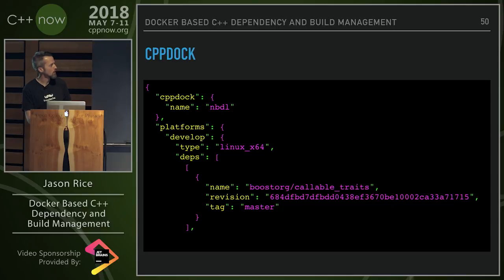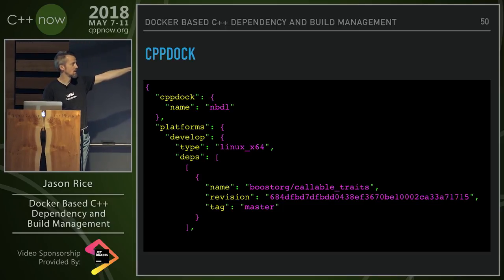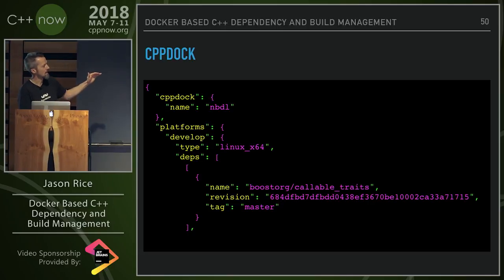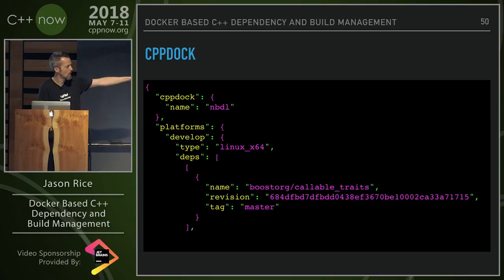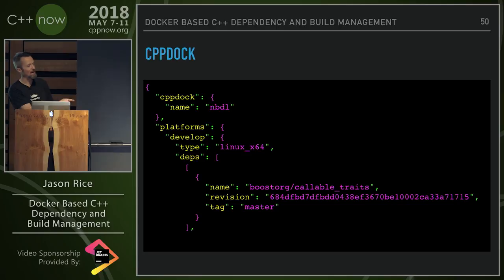I have a project named Nibdl with a platform called `develop` of type Linux X64, which looks for my Docker platform image. Under `deps`, each dependency is an array because you can have multiple deps installed to a single build stage, since some deps depend on others. Everything is flat — no recursive dependencies. By default it looks at GitHub for the repo, such as boost or callable_traits. You can also specify the type of dependency — the only other type right now is a Docker image directly. Eventually I want to add Conan and maybe vcpkg.